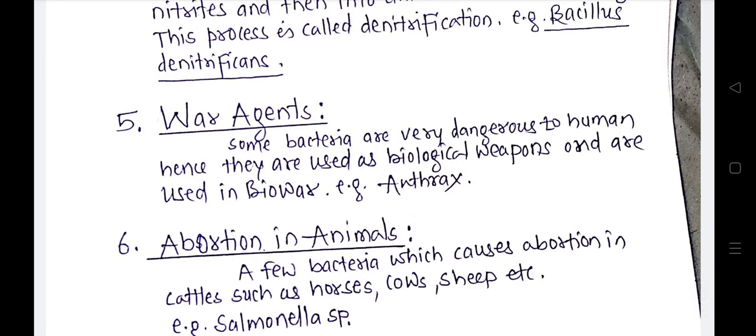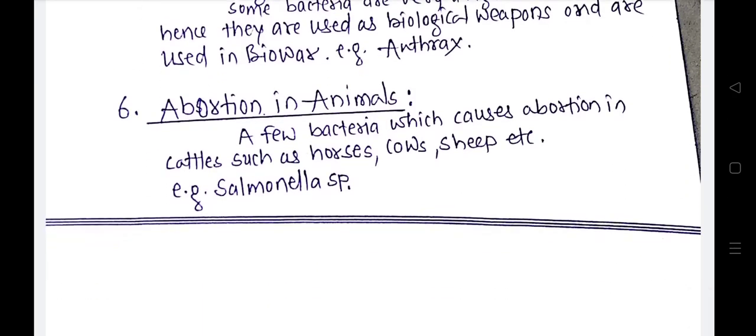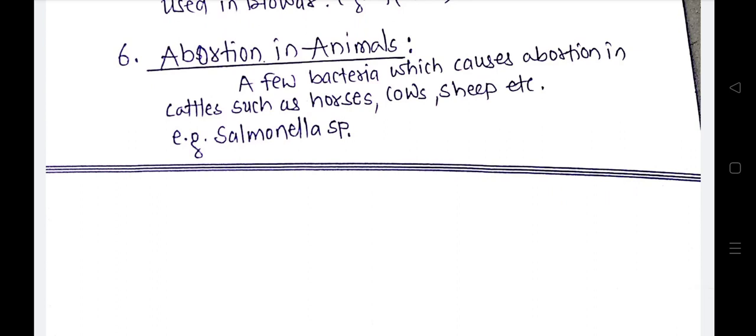Nowadays, war is not only fought with weapons and aeroplanes — war can be waged with the help of microorganisms. Certain bacteria are used as biological weapons; for example, anthrax. Enemies can spread anthrax microorganisms in the territory of their enemies, infecting the population. Additionally, some bacteria cause abortion in cattle such as horses, cows, and sheep — Salmonella is the representative bacteria involved in abortion in animals.